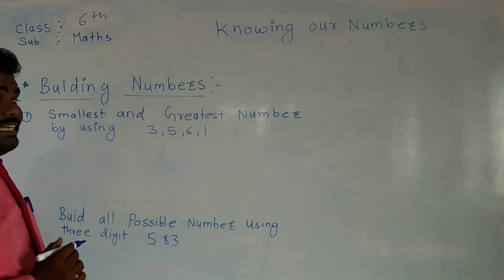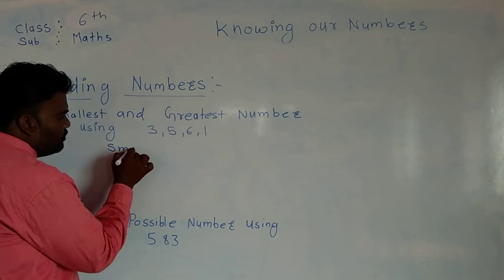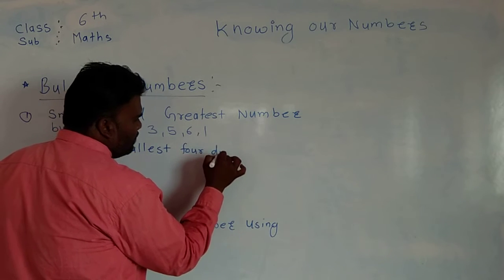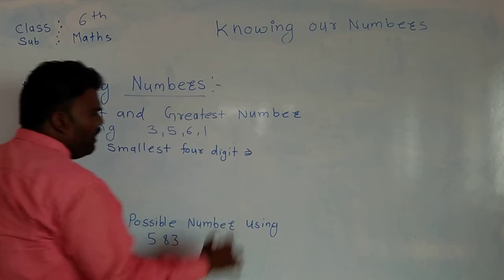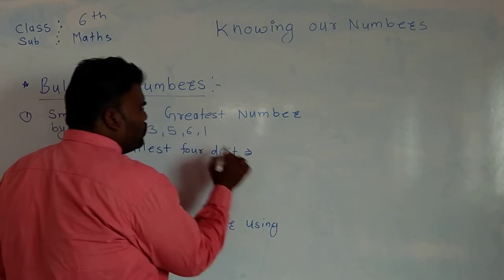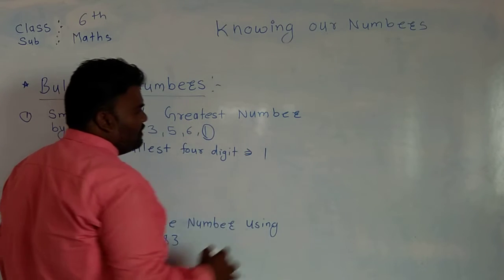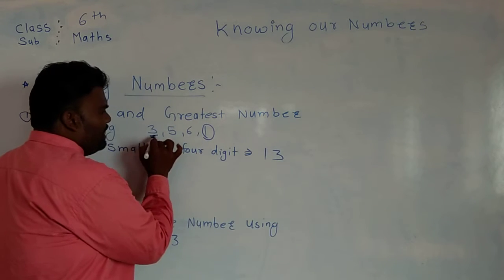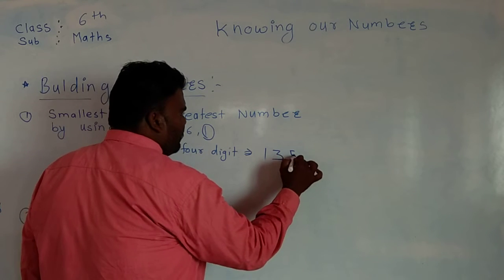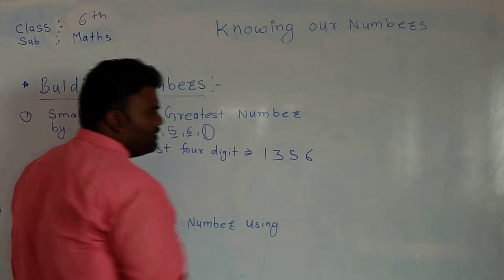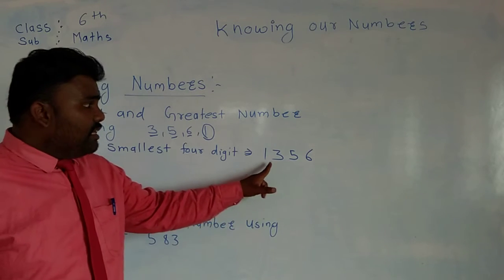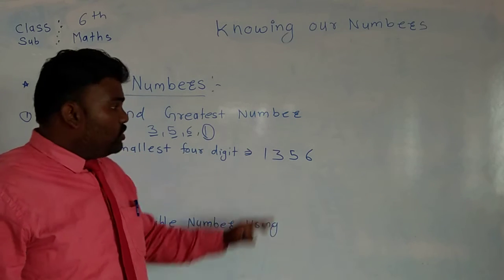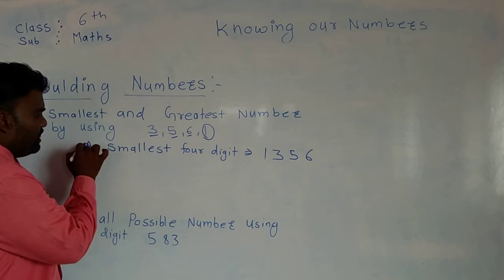Dear students, while writing the smallest four-digit number, what we have to do is write the smaller digit first. So, the smallest digit goes first, then the next greater digit — say three — then which one is greater than three? Five. So I write five here. And then after five comes six. So I arranged the numbers in ascending order, meaning smallest to greatest. This gives us the smallest four-digit number.